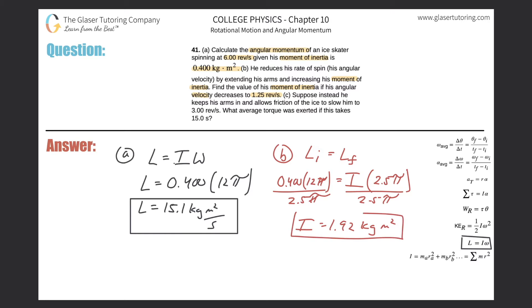Alright, great. And now let's take a look at letter C. So letter C now. It says suppose instead he keeps his arm in, so it's like the part A. And he relies on the ice, or allows friction of the ice to slow him to three revolutions per second. What is or what average torque was exerted if it takes 15 seconds?